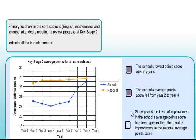Statement three: since year 4 the trend of improvement in the school's average points score has been greater than the trend of improvement in the national average points score. From year 4 the school's score rose from 22 all the way up to around 27 points — a 5-point increase. Compare that with the national picture, which barely goes up even a single point. So that statement is also clearly true.